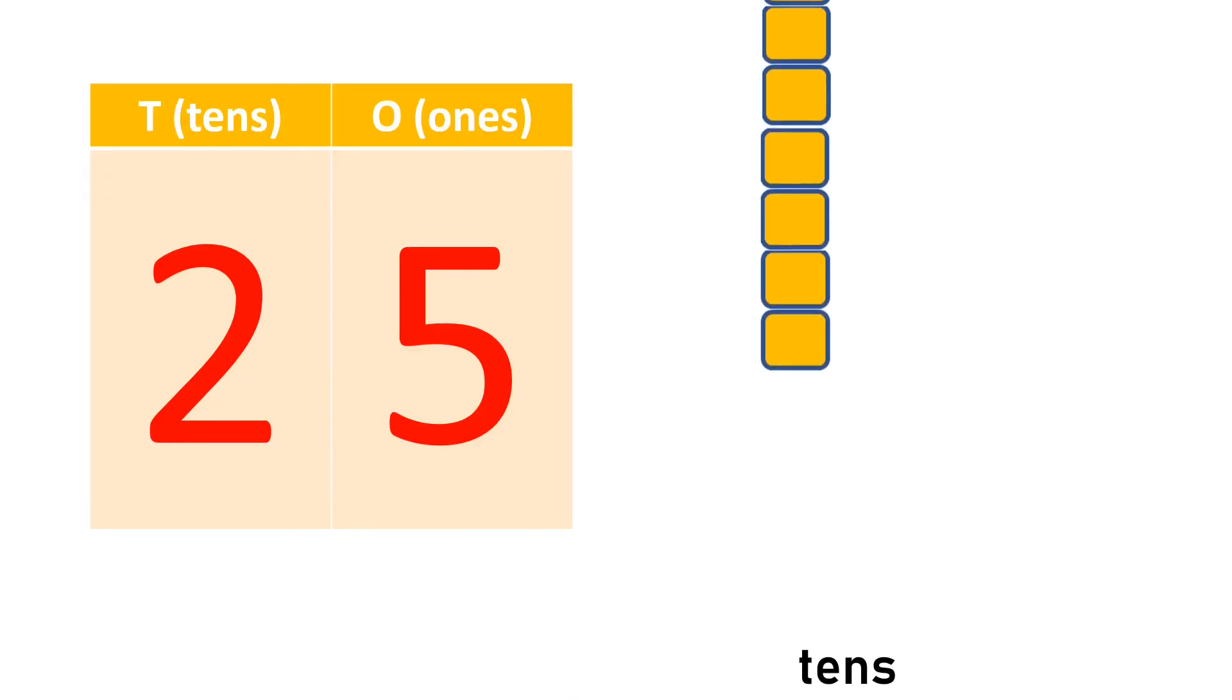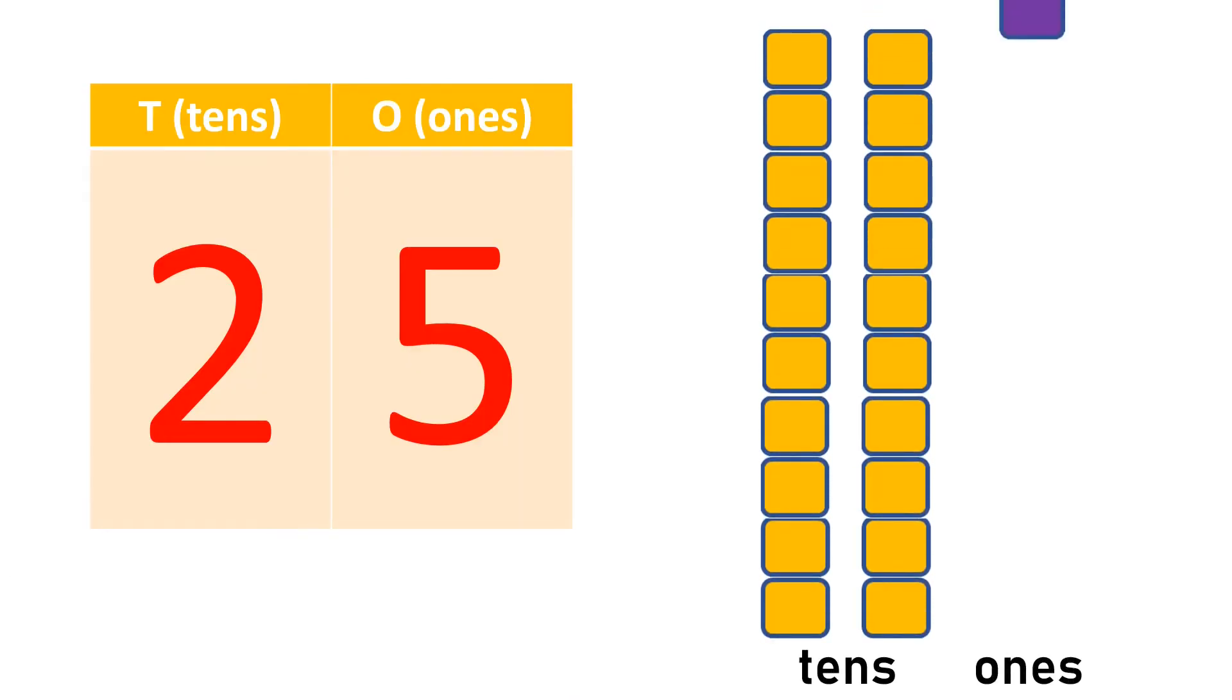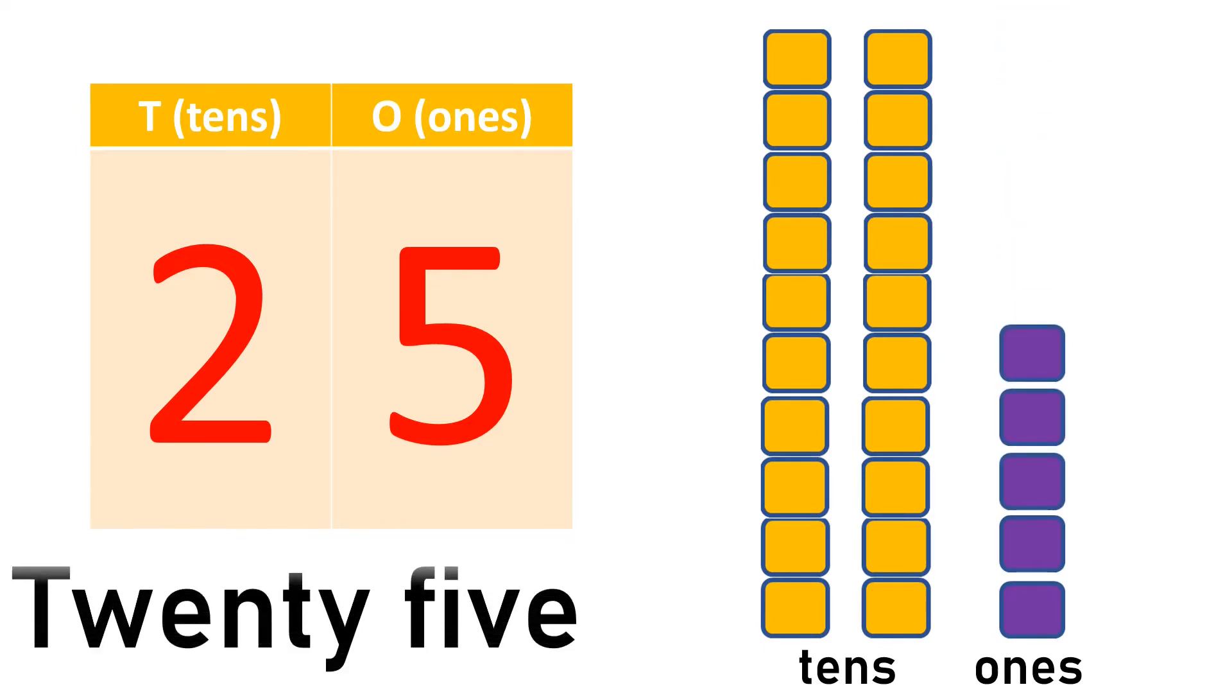2 tens and 1, 2, 3, 4, 5, 5 ones makes 25, TWENTY-FIVE.